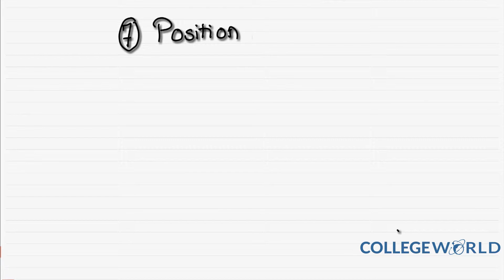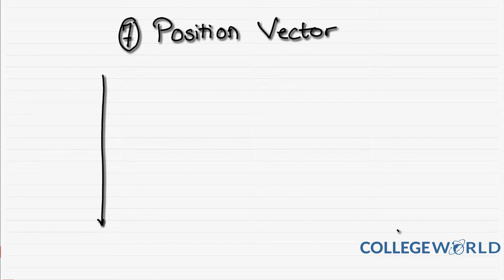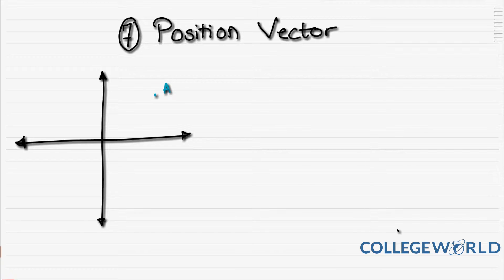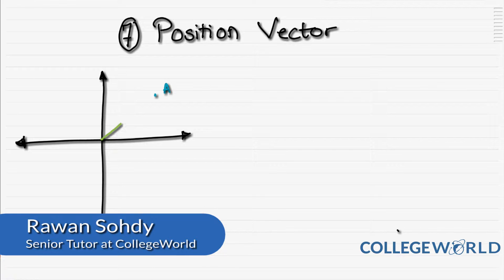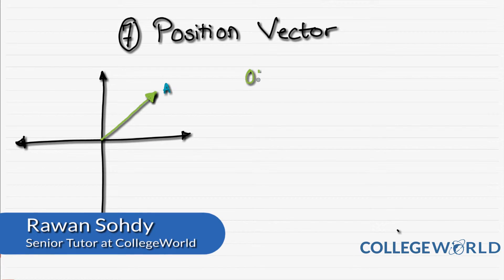When you have a vector written as small letter 'a', it usually stands for OA — the vector from the origin O to the point A. That makes it the position vector of point A. If you want to know the position of point A, you take it relative to your origin. The only straight line from the origin to A goes in that direction, from O to A.